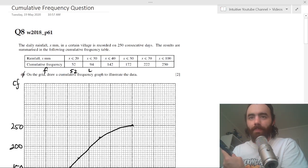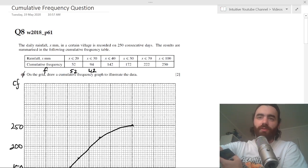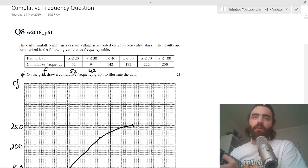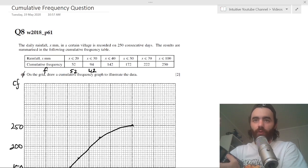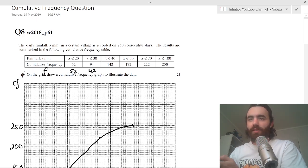We have 52 for the first interval, and then from 20 to 30, well we go from 52 to 94, so we do 94 minus 52. That means 42 times it occurs - there is a recorded daily rainfall of between 20 and 30 millimeters 42 times.